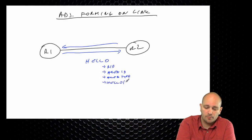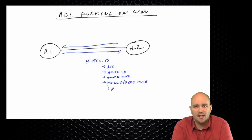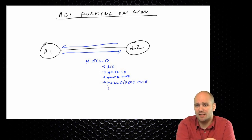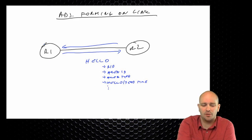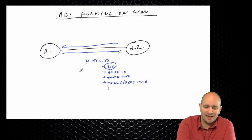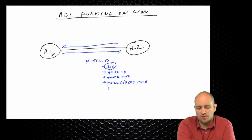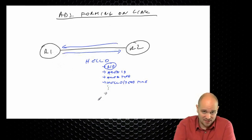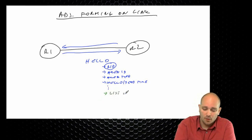We have two routers, R1 and R2, interconnected using some link. The network type doesn't matter — I'll mention differences when relevant. The routers start by sending hellos. Hello packets are first exchanged, and they contain information like router ID, area ID, area type, hello timers, and a couple more parameters — but these are the really important ones.